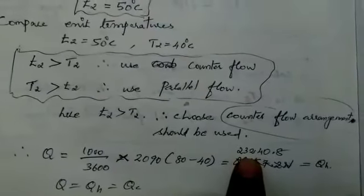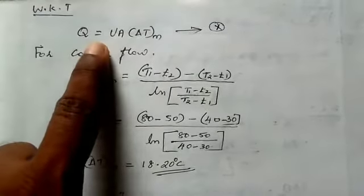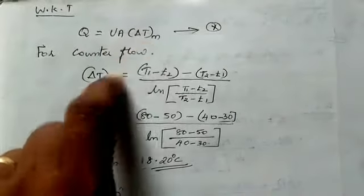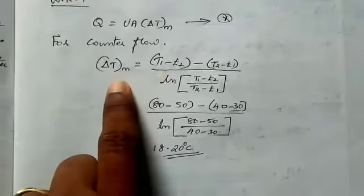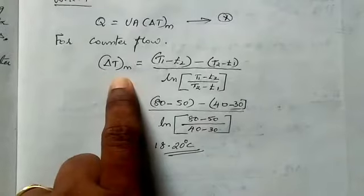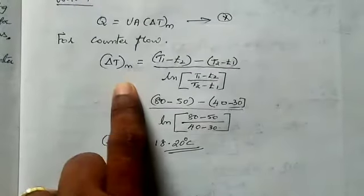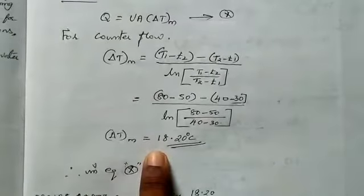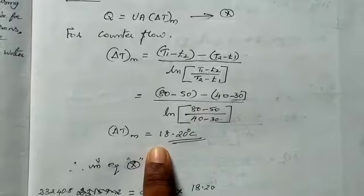Now we calculate the area. Q = U × A × delta Tlm. For counter flow, delta Tlm = 18.20 degree Celsius (from page 152 or 160).